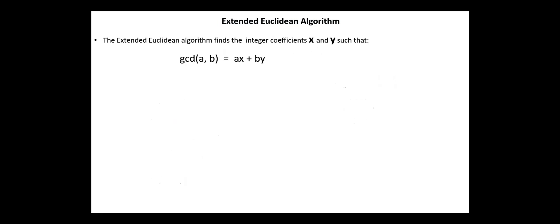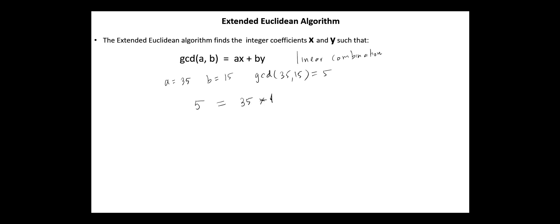Next, the Extended Euclidean Algorithm. The Extended Euclidean Algorithm finds the integer coefficients x and y such that the GCD of a and b equals a multiplied by x plus b multiplied by y. This is a linear combination. For example, if a equals 35 and b equals 15, then GCD(35, 15) equals 5, and this can be written as 35 multiplied by 1 plus 15 multiplied by minus 2, meaning x equals 1 and y equals minus 2.